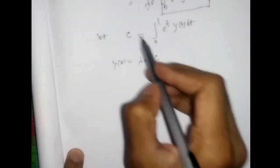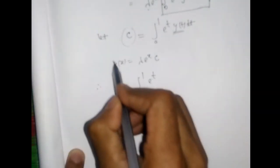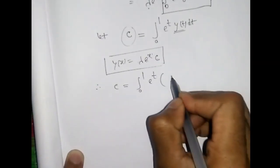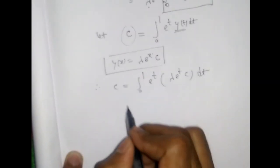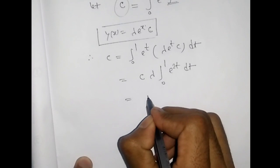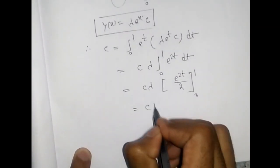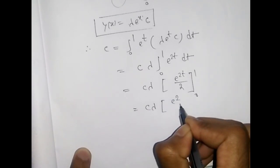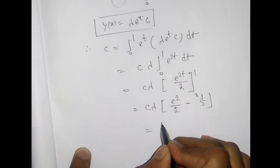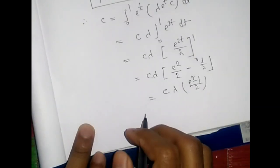Now we find the value of C. Since y(x) = λ eˣ C, we have y(t) = λ eᵗ C. Substituting: C = ∫₀¹ eᵗ · λ eᵗ C dt = C λ ∫₀¹ e^(2t) dt = C λ · [e^(2t)/2]₀¹ = C λ · (e² - 1)/2.